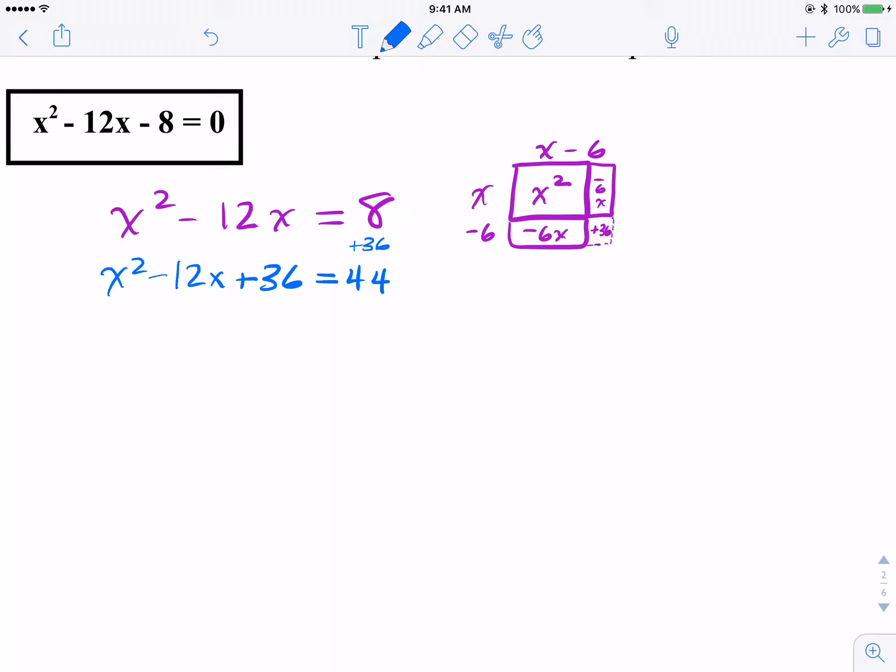So now I do have a perfect trinomial, one of the first things we discussed, X squared minus 12X plus 36. I could write this in this format. Something squared. And this is where the visual helps as well. The dimensions of our square were X minus 6 times X minus 6, or X minus 6 squared.